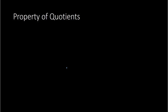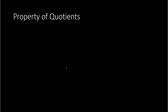The property of quotients in math notation says that if a, b, c, and d are real numbers, assuming b and d are not 0, then ac over bd equals a over b times c over d. All that means is that if you have everything being multiplied together on the top, and then two numbers multiplied together on the bottom of a fraction, you can break it up as a product of two different fractions.